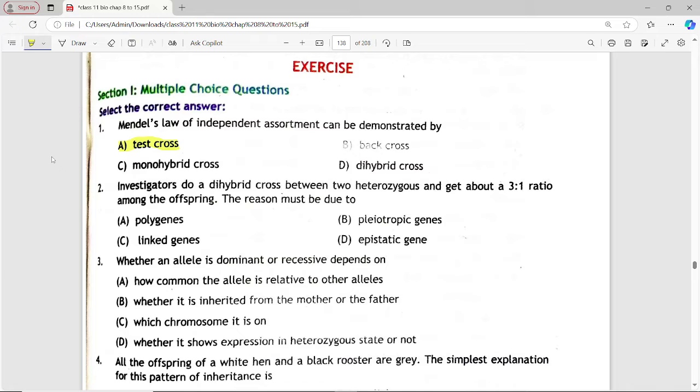Next is: Investigators do a dihybrid cross between two heterozygous and get about 3:1 ratio among offspring. The reason must be due to? Options are: polygenes, pleiotropic genes, linked genes, epistatic gene. Answer is option C, linked genes.